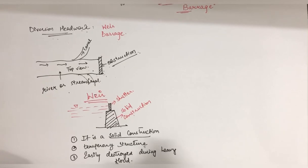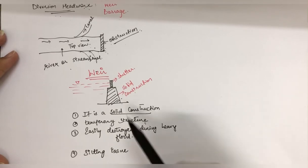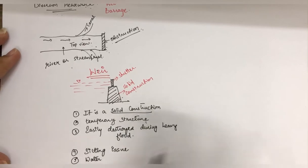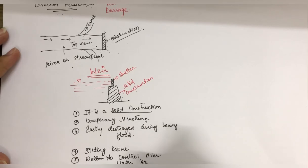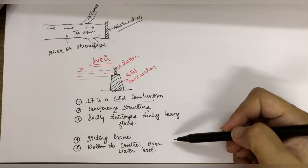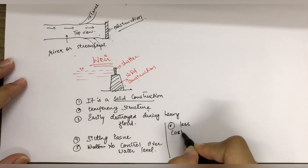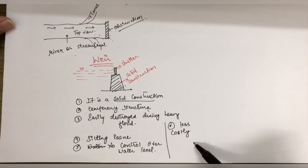Another characteristic is that wear causes a silting issue. There is no control over the water level. Also, the cost is less — wear is less costly because it is a temporary structure and there are shutters but nothing more, so its cost is also less.